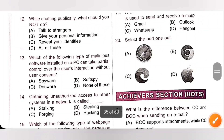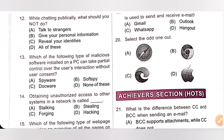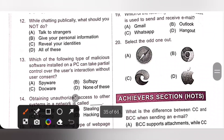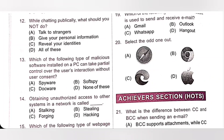Question 20: Select the odd one out. Option A — Safari, it is a web browser. Option B — Google Chrome, it is also a web browser. Option C — Microsoft Edge, it is also a web browser. But option D — Apple. Apple is a multinational technology company that develops computing devices such as smartphones, tablets, iPads, etc. So option D is the odd one out; the others are web browsers.